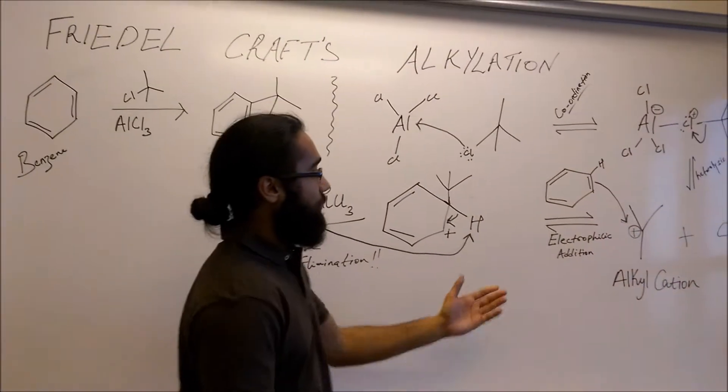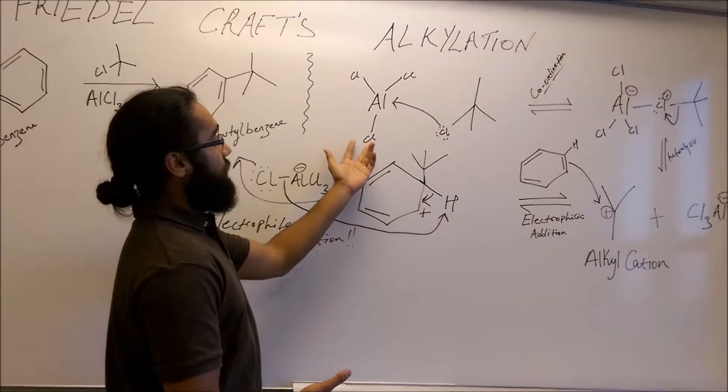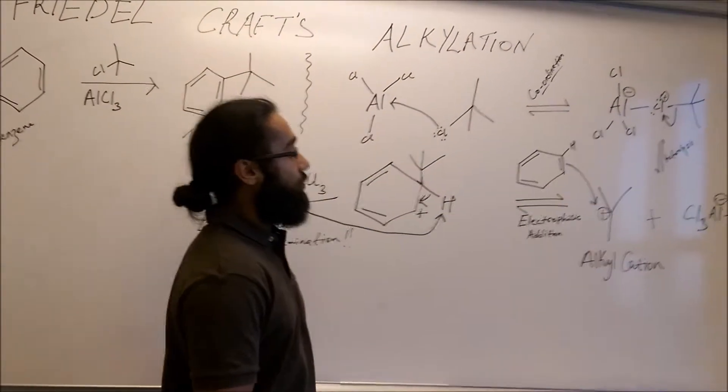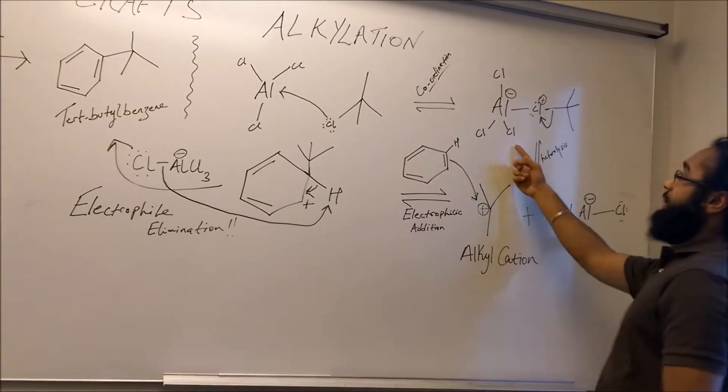First of all, we're generating the electrophile using a Lewis acid. It's going to be accepting a lone pair from the chlorine, and through coordination we're going to be making the zwitterion.